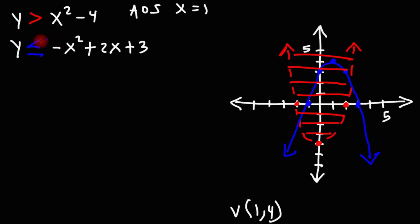And here, we have y is less than or equal to this function. So we're going to shade below the blue graph. Now, the region in which we have basically both graphs shaded is this part here.